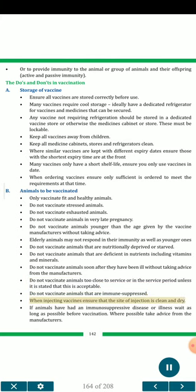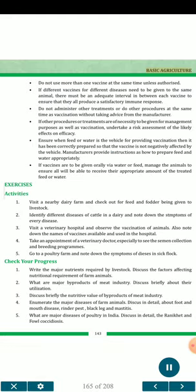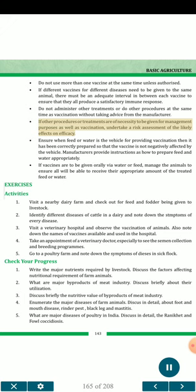Do not vaccinate animals that are immune suppressed. When injecting vaccines, ensure that the site of injection is clean and dry. If animals have had an immunosuppressive disease or illness, wait as long as possible before vaccination. Do not use more than one vaccine at the same time unless authorized. If different vaccines for different diseases need to be given to the same animal, there must be an adequate interval in between each vaccine to ensure a satisfactory immune response. Do not administer other treatments at the same time as vaccination without taking advice from the manufacturer. If procedures are of necessity to be given for management purposes alongside vaccination, undertake a risk assessment of the likely effects on efficacy. Ensure when feed or water is the vehicle for providing vaccination, it has been correctly prepared so that the vaccine is not negatively affected. Manufacturers provide instructions on how to prepare feed and water appropriately. If vaccines are to be given orally via water or feed, manage the animals to ensure all will receive their appropriate amount of the treated feed or water.